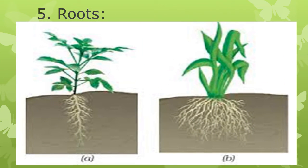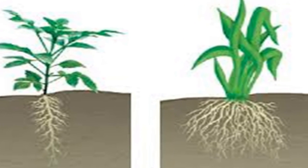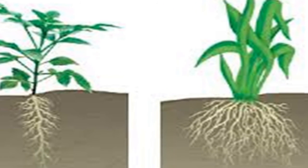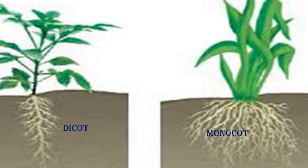Finally: Roots. The Monocot root system is known as a fibrous root system — a root system with no main root. A Dicot root system is one where there is a main root, or tap root, from which smaller roots are projected out.